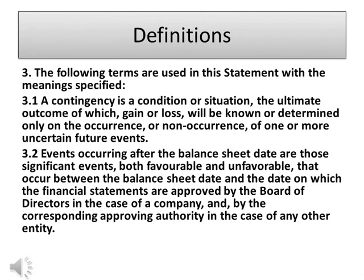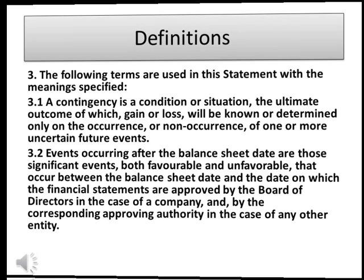Para 3. The following terms are used in this statement with the meanings specified. Para 3.1: A contingency is a condition or situation, the ultimate outcome of which — gain or loss — will be known or determined only on the occurrence or non-occurrence of one or more uncertain future events. Para 3.2: Events occurring after the balance sheet date are those significant events, both favorable and unfavorable, that occur between the balance sheet date and the date on which the financial statements are approved by the Board of Directors in the case of a company, and by the corresponding approving authority in the case of any other entity.